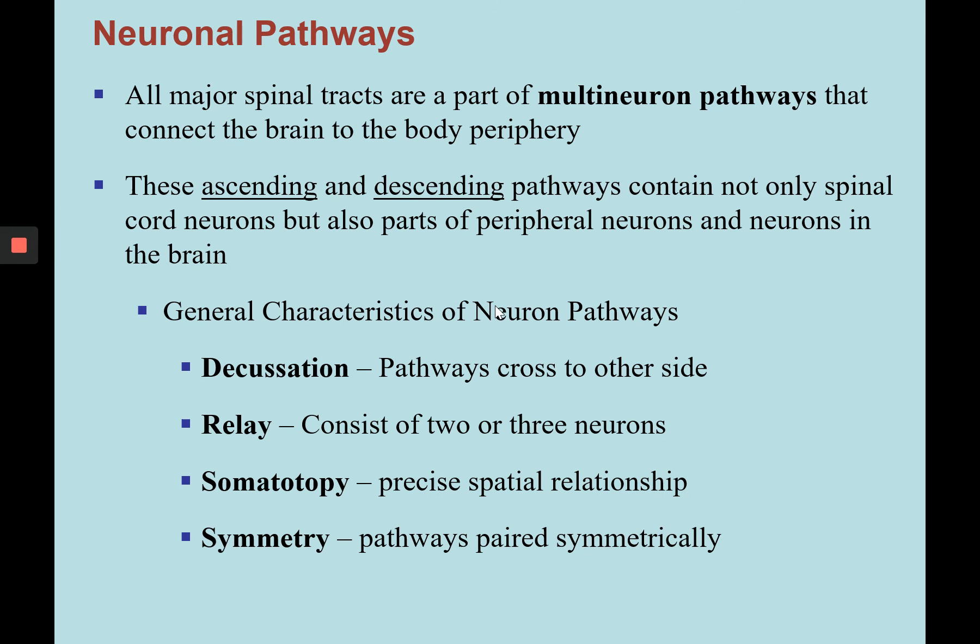All major spinal tracts are part of multineuron pathways — ascending, descending, or commissural. These pathways contain spinal cord neurons, peripheral neurons, and neurons in the brain. General characteristics of neuron pathways include decussation, the ability of neuron signals to cross from one side of the spinal cord to the other; relay, a series of neurons involved in getting signals up or down; precise spatial relationship of where signals are sent depending on where the effector is; and symmetry, as these neuronal pathways are paired in the white matter columns of the spinal cord.